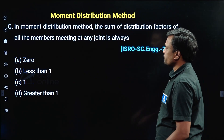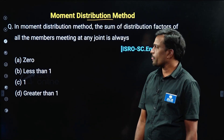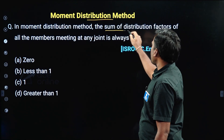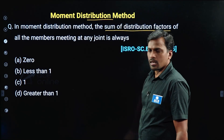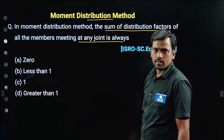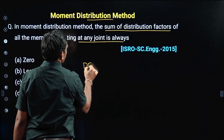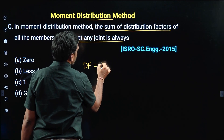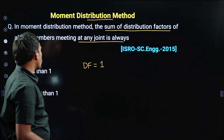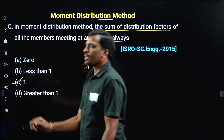Next question is from the Moment Distribution Method chapter. The sum of distribution factors of all members meeting at any joint — the distribution factor at a joint always equals one. So option C is correct.